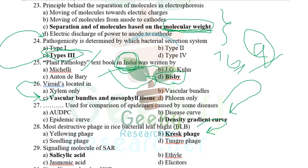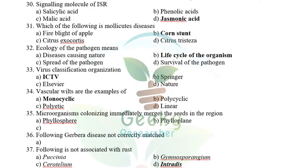The signaling molecule of SAR (Systemic Acquired Resistance) is salicylic acid. The signaling molecule for ISR (Induced Systemic Resistance) is jasmonic acid and ethylene. So: SAR → salicylic acid; ISR → jasmonic acid and ethylene.